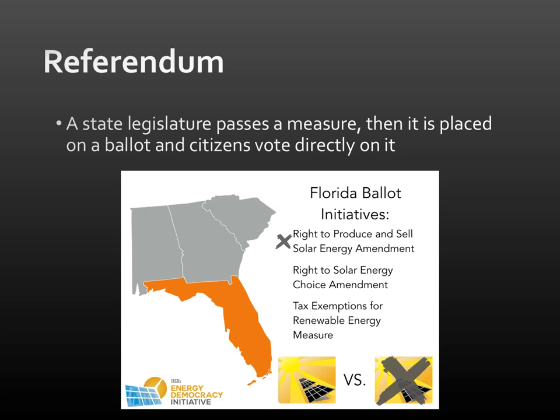Similar to that is a referendum. The difference, though, is who writes the policy in the first place. With the initiative, it was a citizen who wrote it. With the referendum, it's a state legislature that passes some kind of idea or measure, and then they put it on the ballot and the citizens vote directly on it. So the state legislature writes it, but then people do get to vote directly on it — another example of direct democracy.